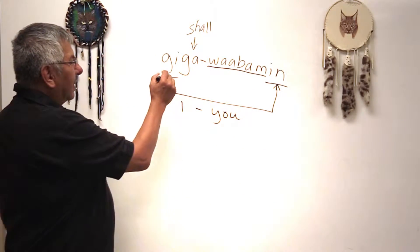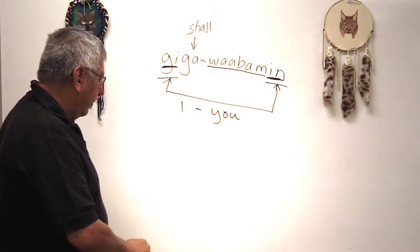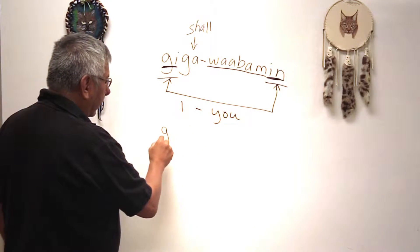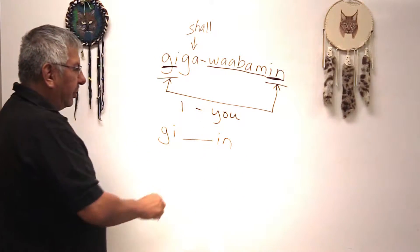So the consistency there is GI-IN. And then without that, it's the same thing, IN.